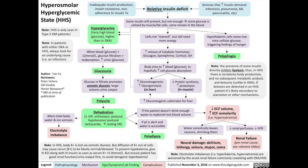The reduced extracellular fluid volume, such as reduced blood volume, also reduces the perfusion of the kidneys, meaning a reduced glomerular filtration rate and possible kidney failure — a pre-renal cause of kidney failure. This renal failure can actually worsen electrolyte imbalances such as hyperkalemia and hypernatremia that commonly coexist with DKA and HHS.